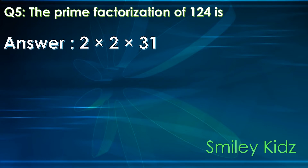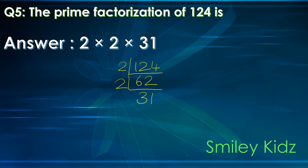The correct answer is 2 multiplied by 2 multiplied by 31. Prime factorization of 124: 2 times 62 is 124, 2 times 31 is 62. 31 is a prime number so we stop there. Therefore, 124 is equal to 2 multiplied by 2 multiplied by 31.